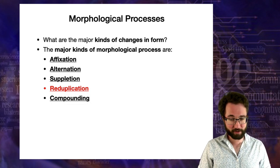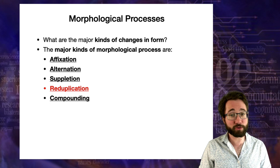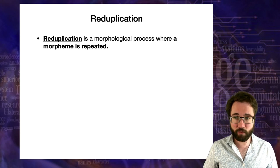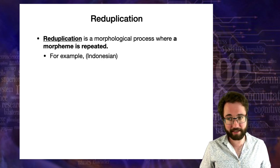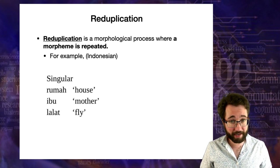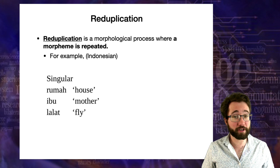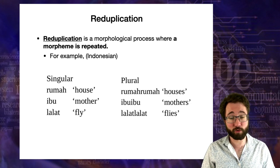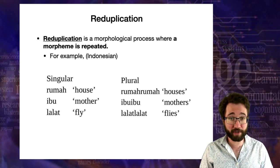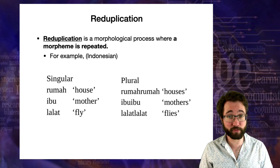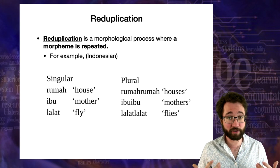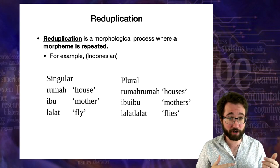The next major kind of morphological process, something we don't really have in English, is reduplication. Reduplication is a morphological process where a morpheme is repeated. In Indonesian, the word for house is 'rumah', for mother is 'ibu', and for fly is 'lalat'. The plurals are 'rumah-rumah', 'ibu-ibu', and 'lalat-lalat'. You form the plural by doubling the singular morpheme — that's reduplication. Many languages have this as a productive process, where you can take any word and make it plural by doubling it.